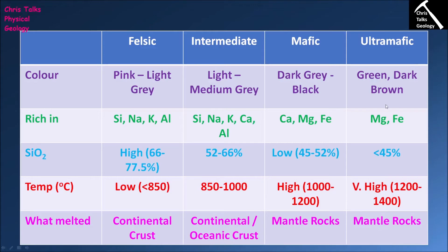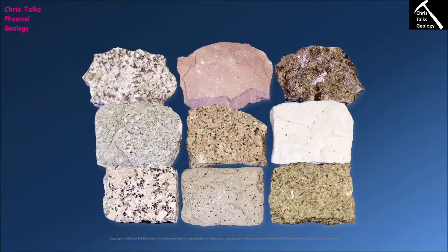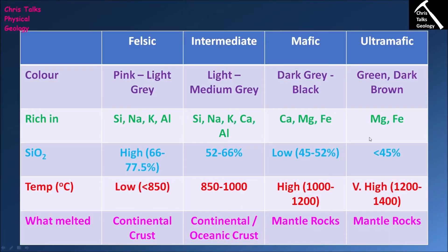Ultramafic igneous rocks form from magmas very rich in iron and magnesium, so the resulting rock is dominated by iron and magnesium silicate minerals. Looking at the samples, one ultramafic rock is dominated by the green mineral olivine — which has a chemical composition of iron, magnesium, and silicon — and another is a pyroxenite, dominated by the mineral orthopyroxene. So we can see how the chemistry of the magma controls the minerals, which in turn controls the colour of our rock sample.